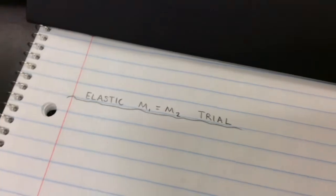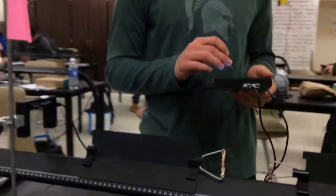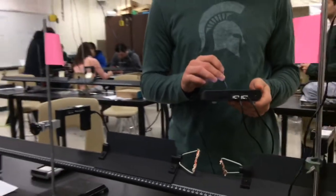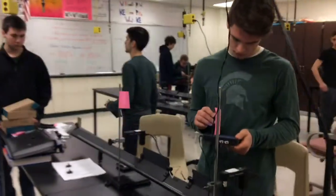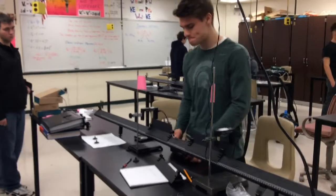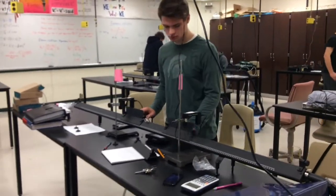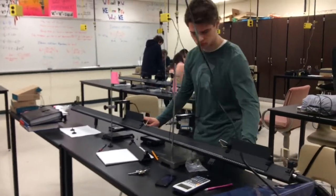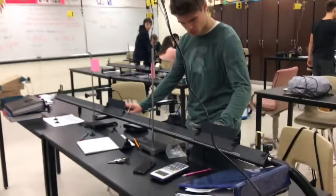First, we started with our elastic collision where both masses of both objects are the same. As you can see, there are rubber bands between each object so that there will be a collision and one will bounce off the other.